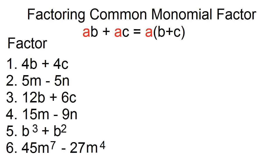Number 1. Factor 4B plus 4C. The common monomial factor is 4. 4B divided by 4 is B, plus 4C divided by 4 is C. The factors are 4 and the quantity B plus C. To check, just multiply 4 and the quantity B plus C: 4 times B is 4B, plus 4 times C is 4C.